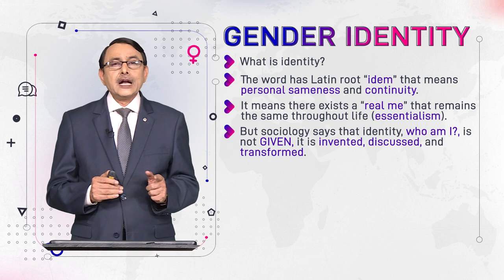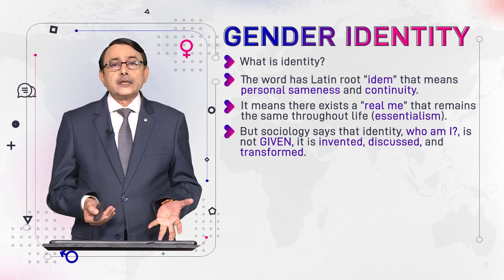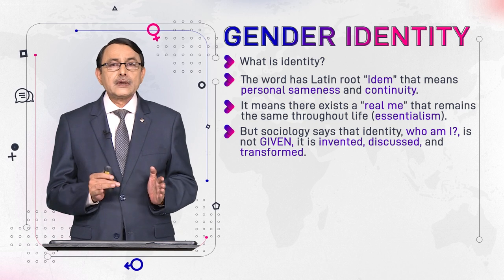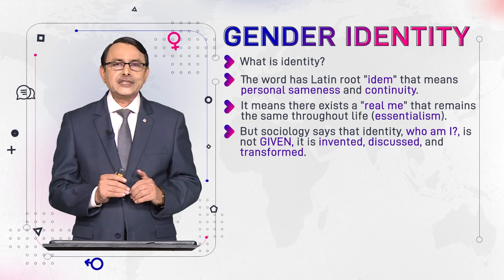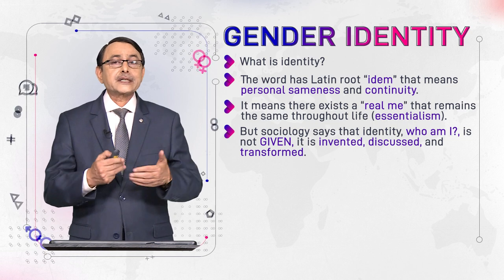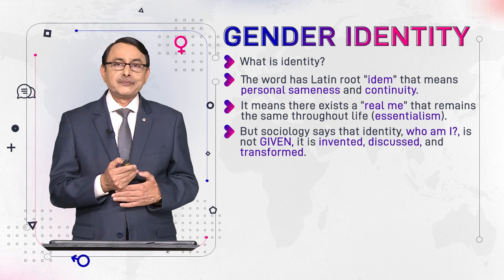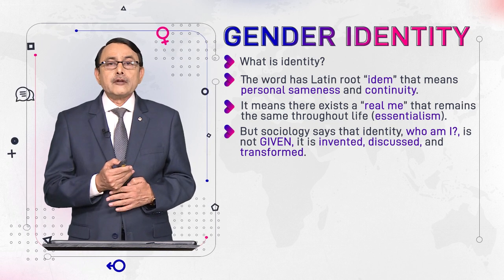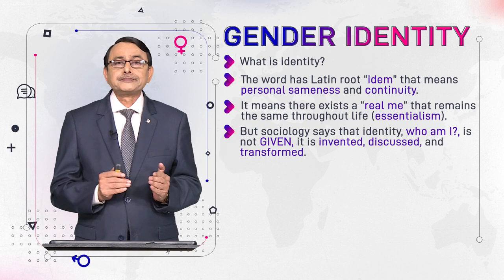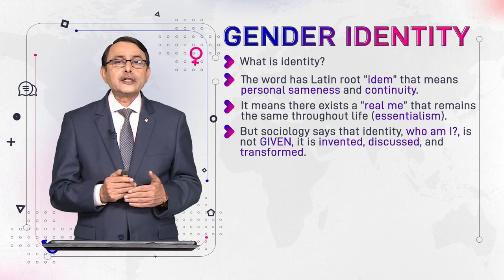Terminologically, sociologists say that identity does not remain the same and does not remain constant. It is invented, created, and constructed. We construct it in talk, in social interaction — we discuss it, negotiate it, and construct it in collaboration with others. It is changeable and transformed by our interactions in different contexts during our lifespan.